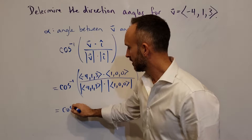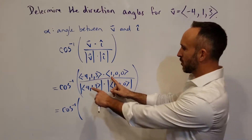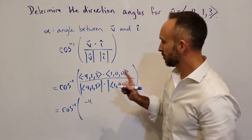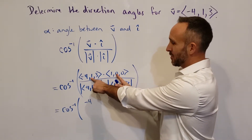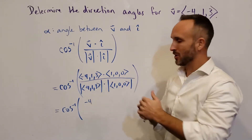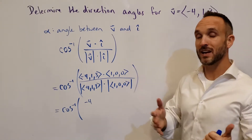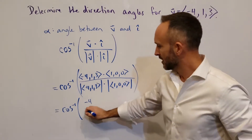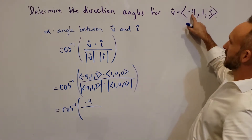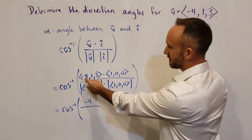So we get cosine inverse. The dot product: we multiply corresponding components. Negative 4 times 1 is negative 4. Plus 1 times 0 is 0. Plus 3 times 0 is 0. You can already see the beauty of having a unit vector here, where two of the components are 0 — it makes it super easy to do the dot product. Our numerator ends up being the x component of v, because the 1 and the 3 turn into 0, leaving just the negative 4.